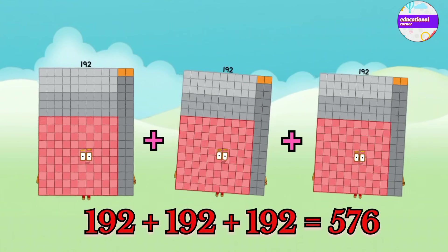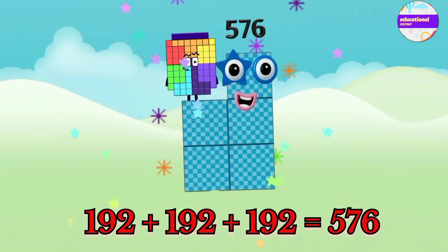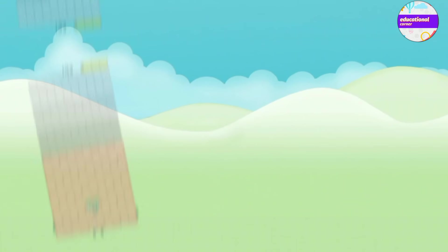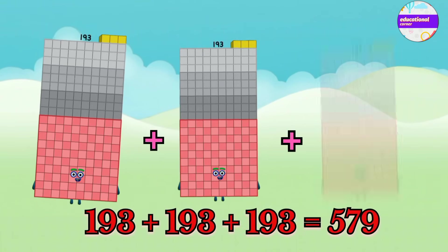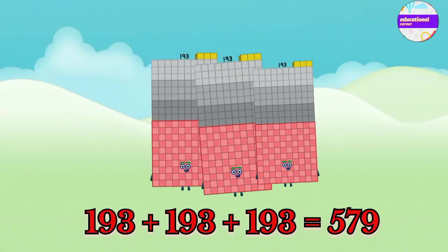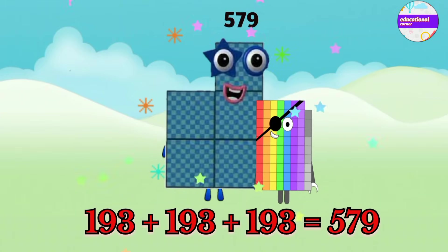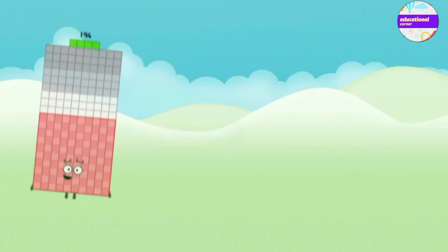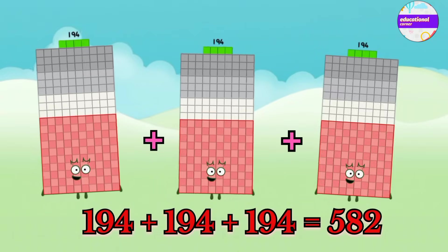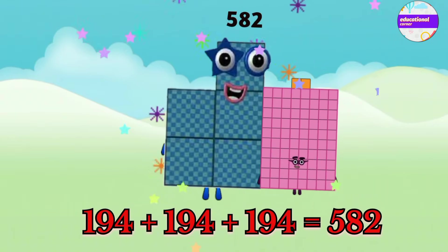192 plus 192 plus 192 equals 576. 193 plus 193 plus 193 equals 579. 194 plus 194 plus 194 equals 582.